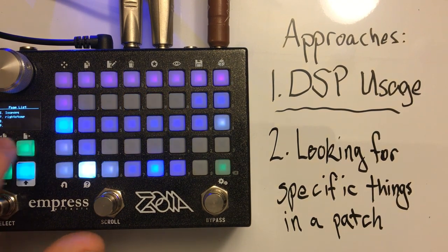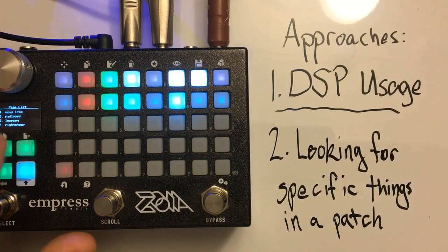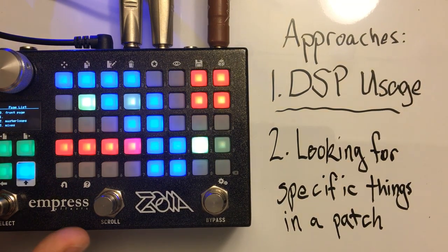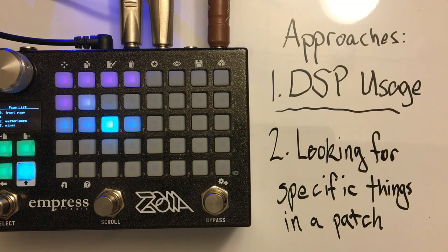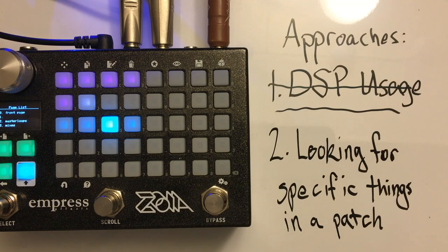This patch goes on — there are a couple more pages — and DSP usage only shows so much. DSP usage can fail us in this quest, but it is still a valuable tool, particularly diagnostically. If something's going wrong in a patch, one thing to check is if a module is using way more CPU than you would expect, which DSP usage can tell you.